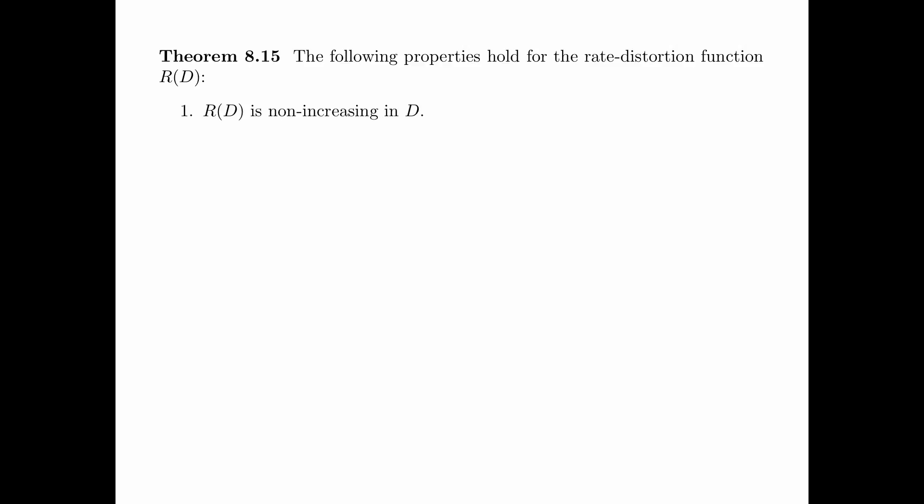Theorem 8.15 gives a few basic properties of the rate-distortion function R(D). First, R(D) is non-increasing in D. Second, R(D) is convex. Third, R(D) is equal to 0 for D greater than or equal to D_max. Fourth, R(D) is less than or equal to H(x).